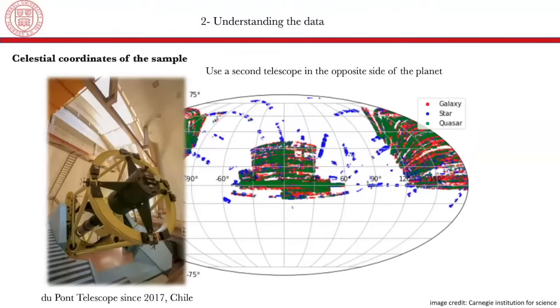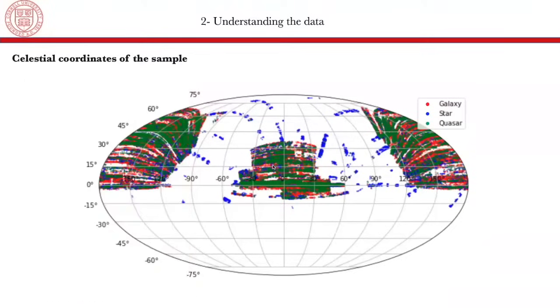And to address this problem, the SDSS also uses a second telescope located in the other side of the planet, particularly in Chile. And the name of this telescope is called DuPont telescope. And it's been used since 2017. However, for the sake of this presentation and this work, we will be only focusing on these data located in the north part.